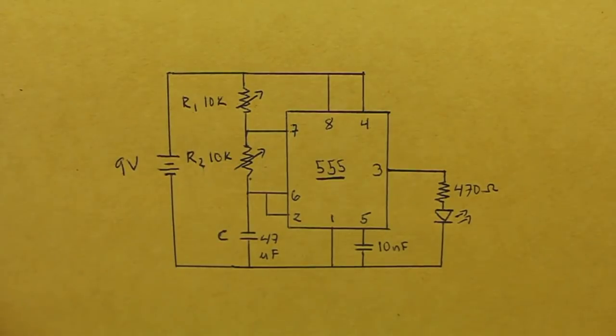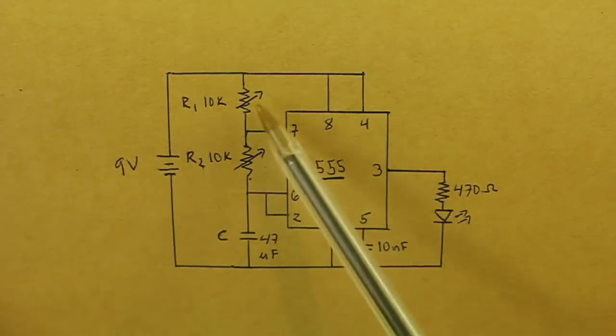This is the diagram of connection of the 555 timer in astable mode. I am using it to turn on and off this LED, and the characteristics of the pulses are controlled by this capacitor and these two resistors.